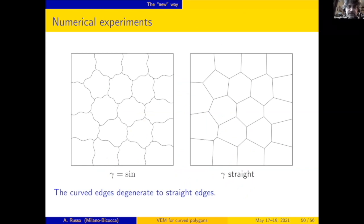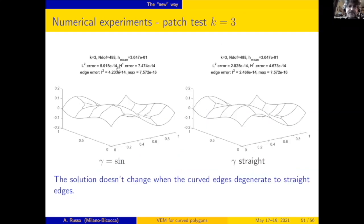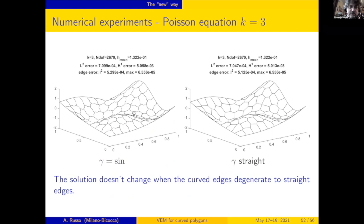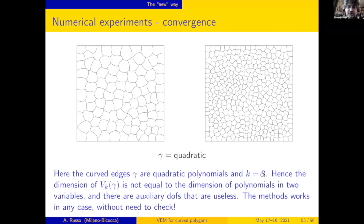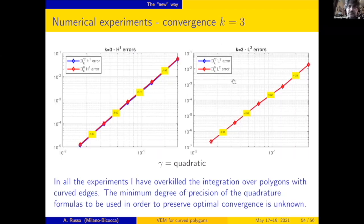In a numerical experiment where the curves are truly non-algebraic, and we gradually degenerate the curve, the patch test passes without issue. For k equal to three with quadratic edges, even when all edges are degenerate, the method works — the order of convergence is exactly as expected.